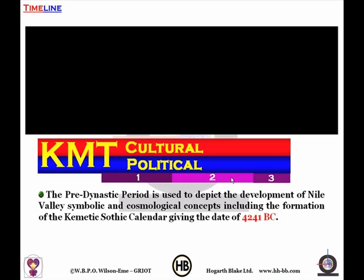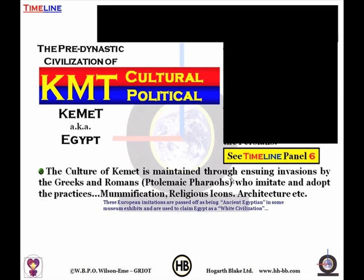Please check out Robin Walker's book, When We Ruled. The culture of Kemet is maintained through the ensuing invasions by the Greeks and Romans, known as the Ptolemaic pharaohs, who imitate and adopt the practices of mummification, religious icons and architecture. These European imitations are passed off as being ancient Egyptian in some museum exhibits and are used to claim Egypt as a white civilization.